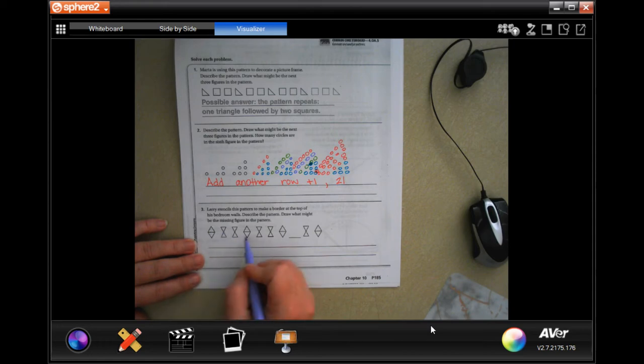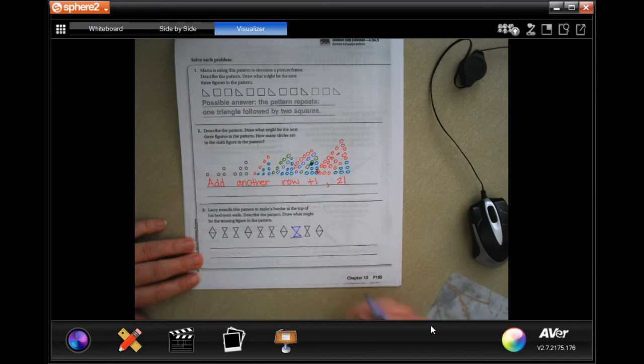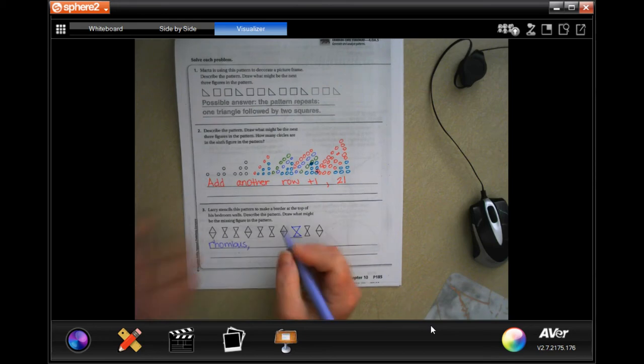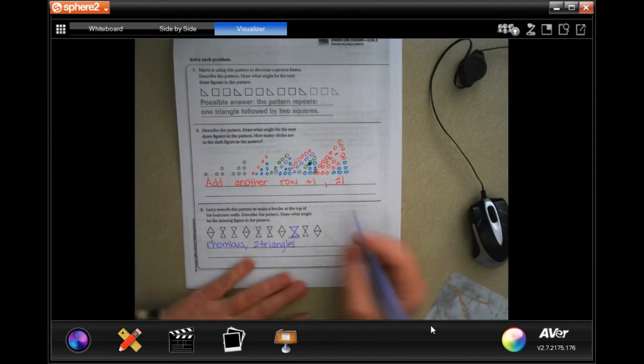Eight, eight, rhombus, eight, eight, rhombus, eight, eight, rhombus. So the pattern is rhombus, two triangles for the pattern.